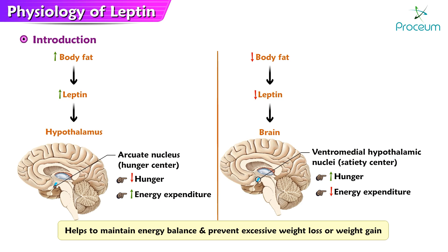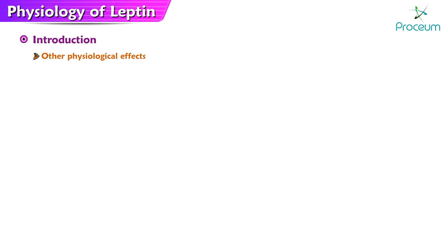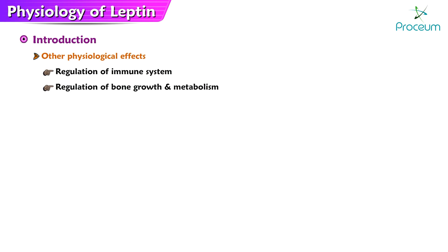In addition to its role in regulating energy balance, leptin has been shown to have a number of other physiological effects, including regulation of the immune system, regulation of bone growth and metabolism, and modulation of reproductive function.